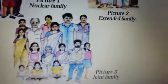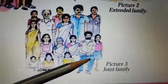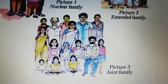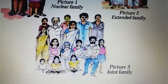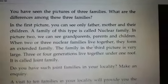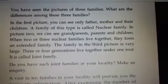In the third picture, members of 3 or 4 generations live together under one roof. The family in the third picture is very large — 3 or 4 generations living together under one roof. It is called a Joint Family. Members of 3 or 4 generations living together in a single house is called a Joint Family. These are the 3 types of families.